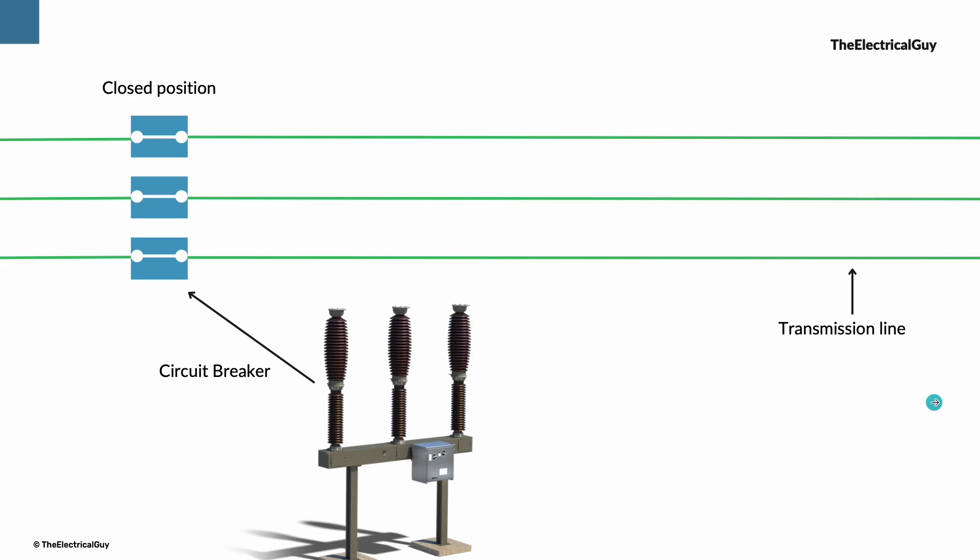Let's say there is a lightning stroke or maybe a bird crashed on the line and one of the phases touched the ground. So there will be a fault and the relay will give command to circuit breaker and the breaker will open. Now the supply has been interrupted.